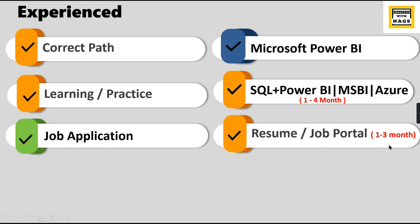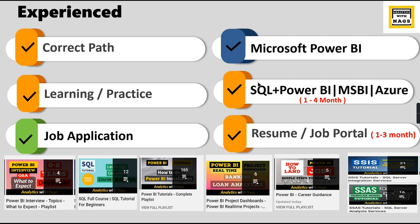For job application, it remains the same — resume and job portals. For experienced and freshers there is no different path: choose the technology, learn it, and apply for jobs. The thing is, time matters here. Based on your experience, learning will take one to four months, and applying and getting into the interview process will take one to three months. So it is a time-consuming process — you can get a job within one to two months or it may take up to six months or a year.